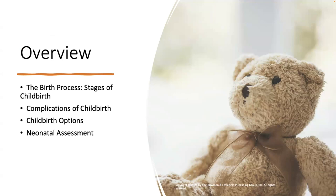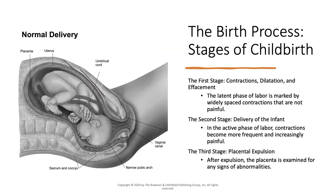So for our overview, we will be looking at the birth process, the stages of childbirth, some common complications of childbirth, childbirth options, and then also the APGAR neonatal assessment. Starting off with the birth process, there are three main stages of childbirth or labor. The first stage is contractions, dilation, and effacement.